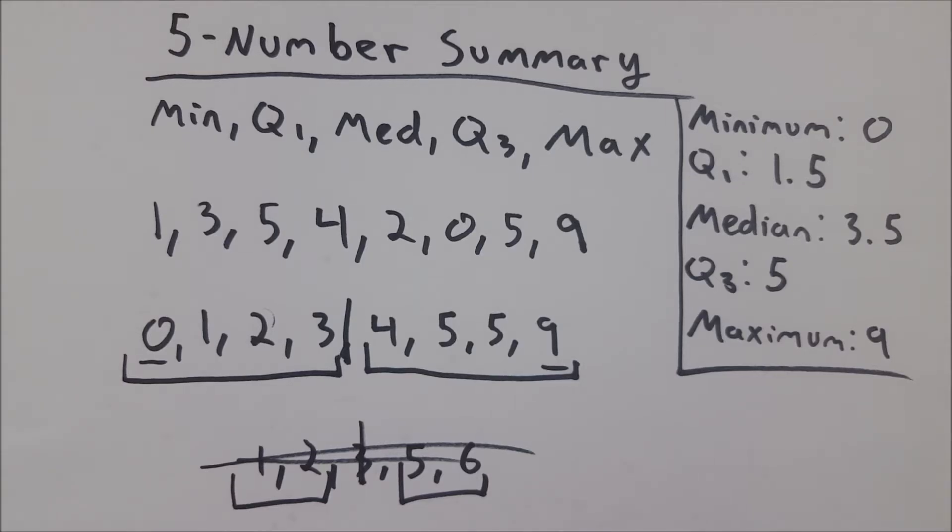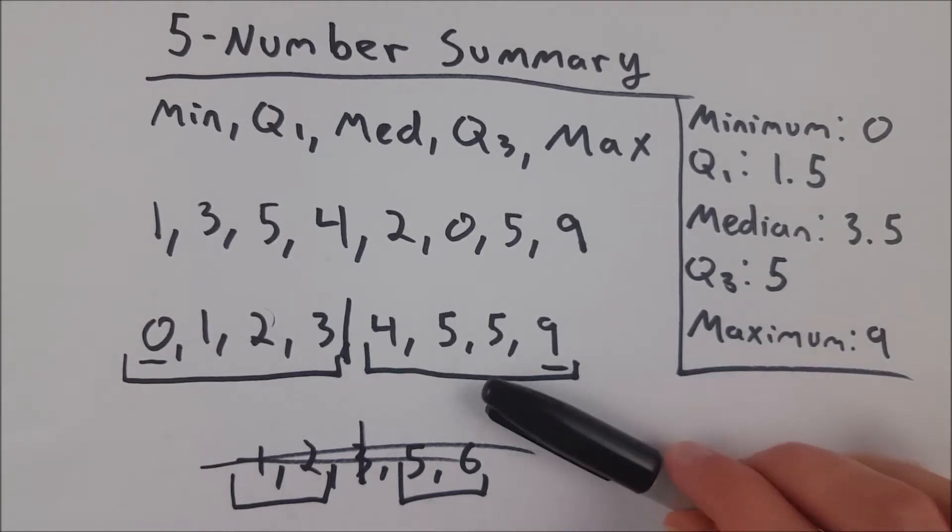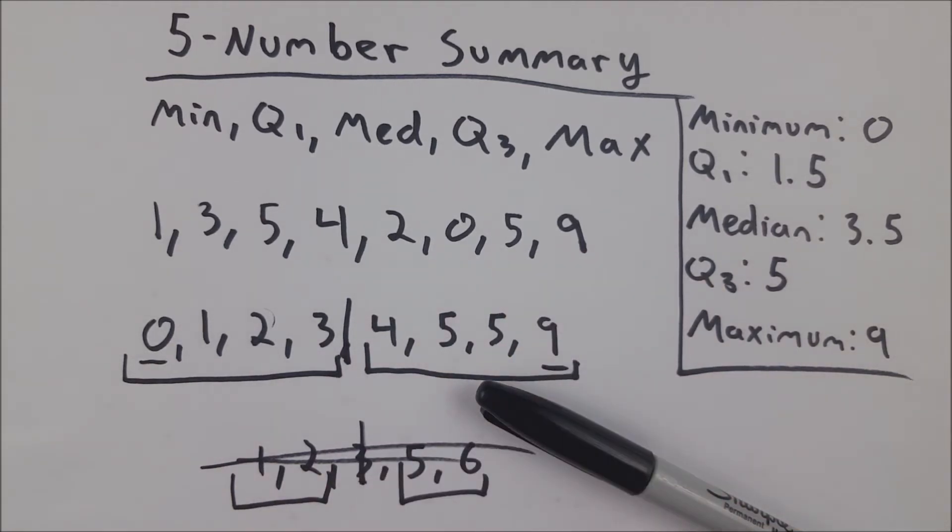So that is just a quick example of the five number summary with a set of data gathered from an alligator wrestling contest that I was in. I was the nine. So thank you very much for watching. I hope this video helped you understand what a five number summary is and how to construct it. It just gives you a nice little overview of a set of data. You can also use a five number summary to make something that is called a box plot, which is a very cool representation of data. But we'll talk about that another time.